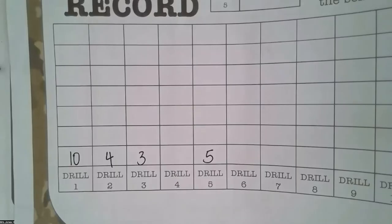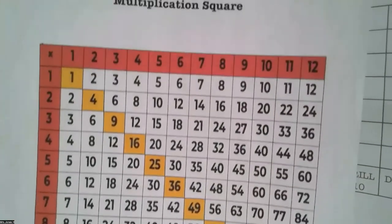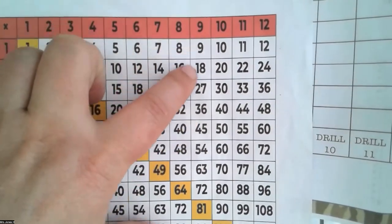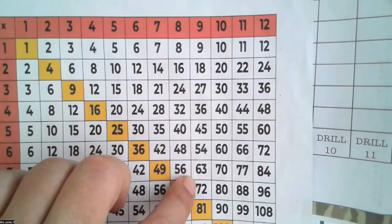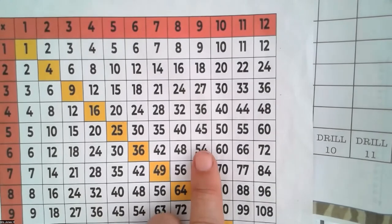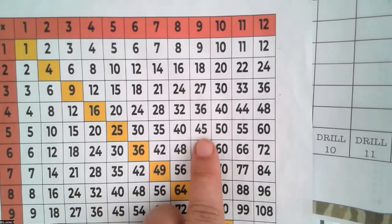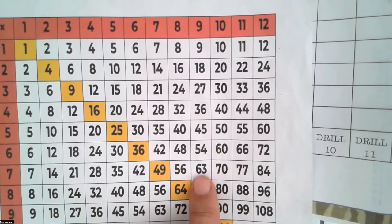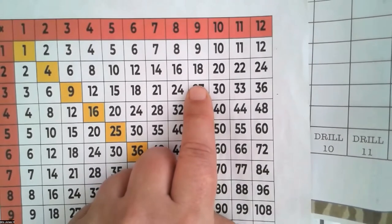We also use a multiplication square, which helps us to see patterns — for instance, in the nine times tables. There are some clever patterns you might not have known about. Each of the multiples of nine, if you add the digits together, they equal nine. So four and five equal nine, six and three equal nine, one and eight equal nine. That pattern will really help us to understand and get our nine times tables correct.